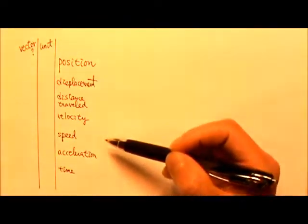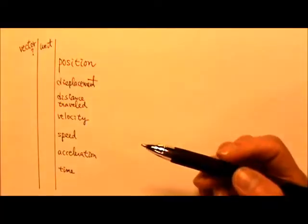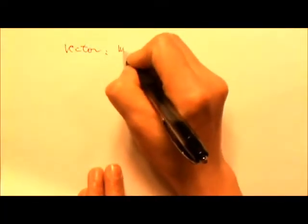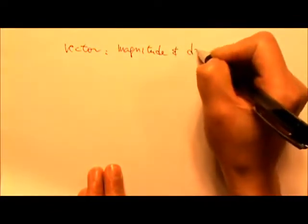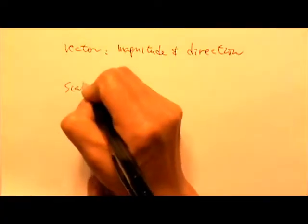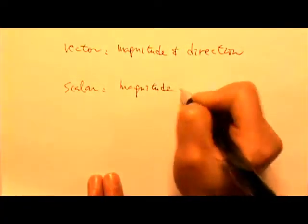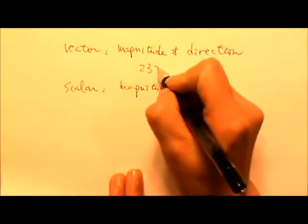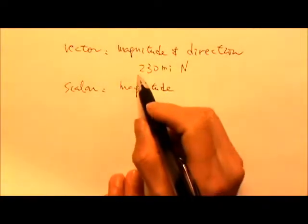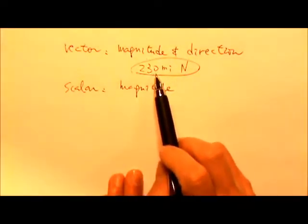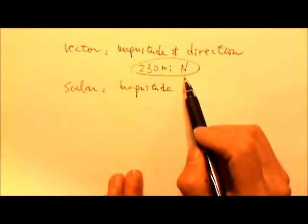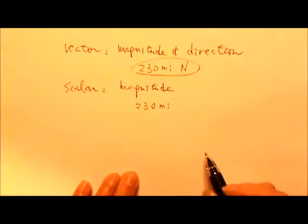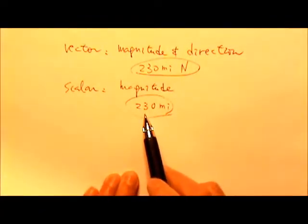We will go over all these terms and talk about whether they are vectors or scalars. A vector is something that has a magnitude and a direction. A scalar only has a magnitude. For example, if I tell you New York City is 230 miles to the north of Washington D.C., this is a vector — it has a magnitude, 230 miles, and a direction. If I just say New York City is 230 miles away from Washington D.C., that would be a scalar because it only has a magnitude, no direction.